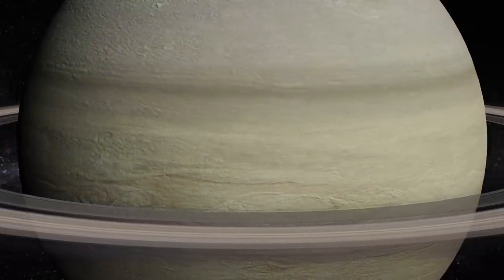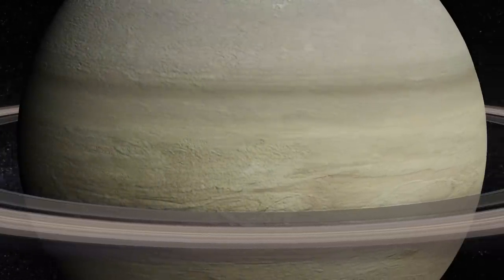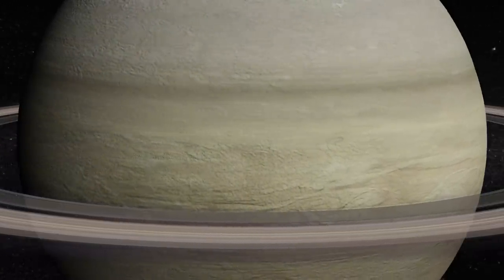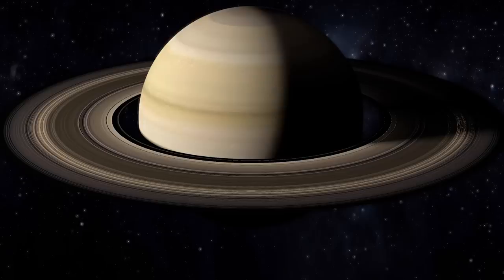Although Saturn's rings cannot go unnoticed, their accumulated matter would not represent more than a globe of 100 kilometers in diameter, almost 60 miles in diameter. Their creation is still a mystery. The rings seem to be younger than Saturn.